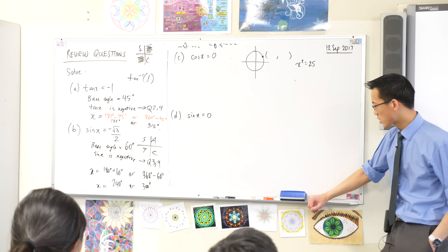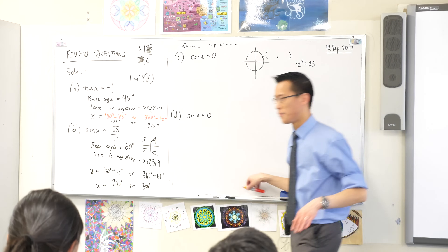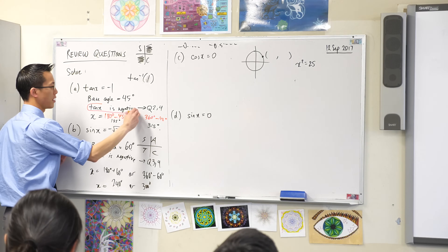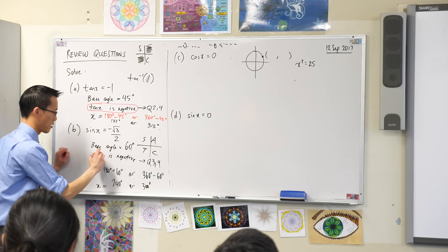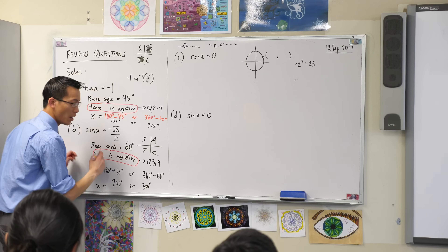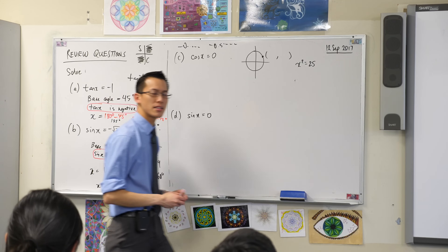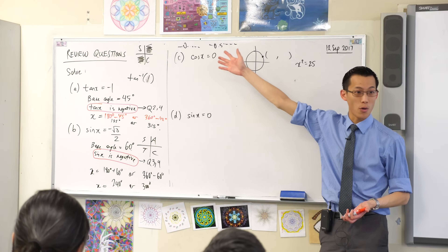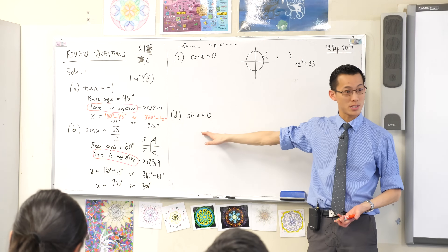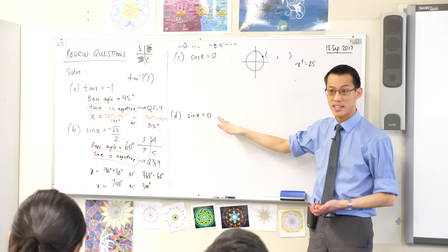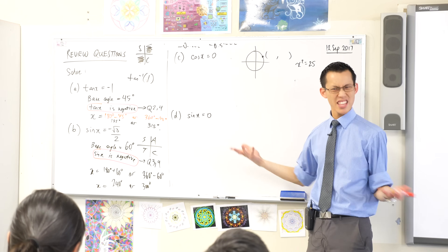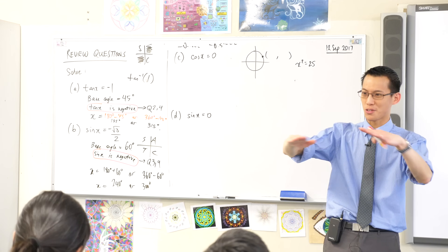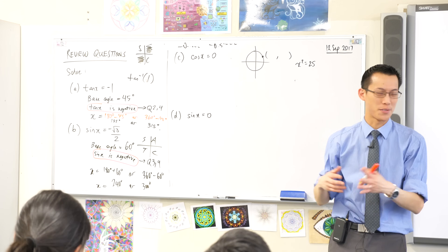There are a couple of problems, but the biggest one that I think is most obvious is this one. See this step in here? You can't answer the question — is cos positive or negative, is sine positive or negative — because 0 is neither. It's not up, it's not down, it's that special number that isn't either of those.